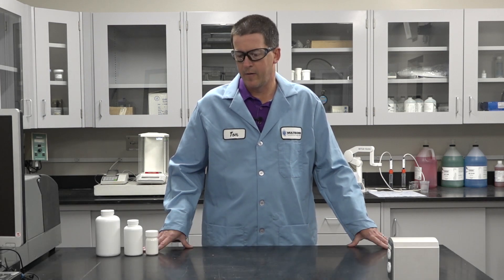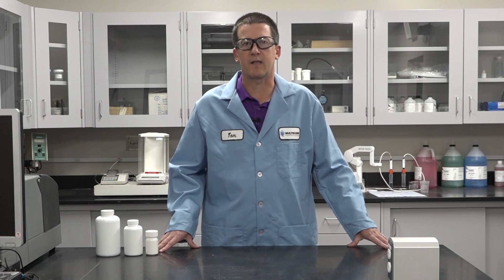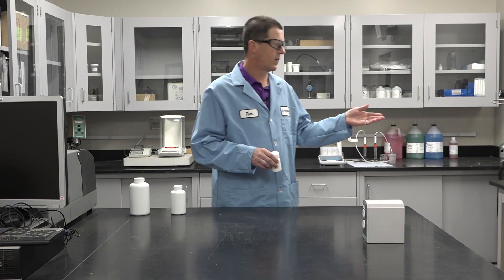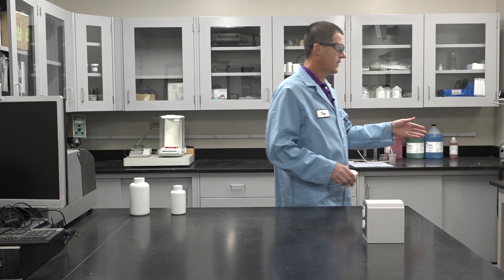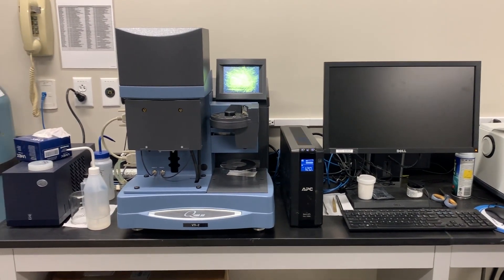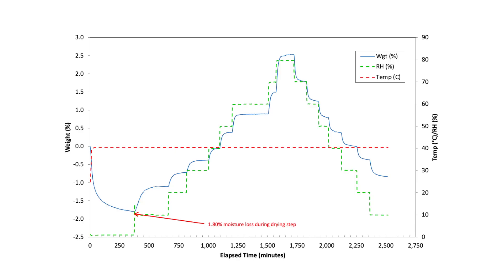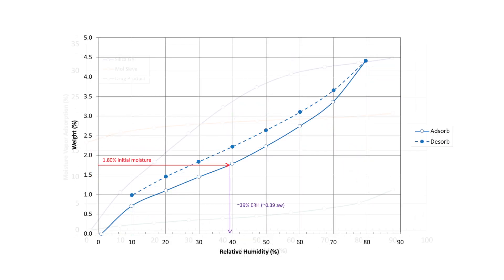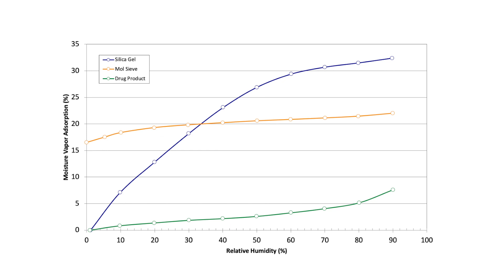One of the value-added services that we provide to our customers is helping them decide and calculate how much desiccant or sorbent to use in their pharmaceutical products. We use instrumentation such as this, a symmetrical gravimetric analyzer, and we create what's called the isotherm. The isotherm is the substance's adsorption capacity at a given temperature and relative humidity.